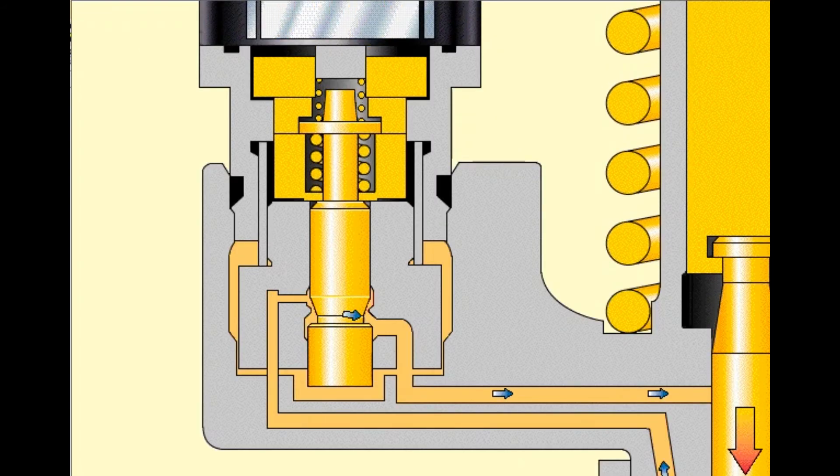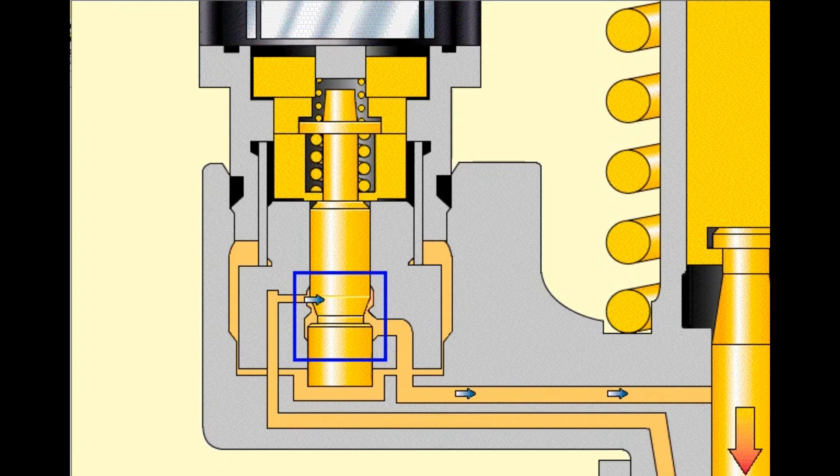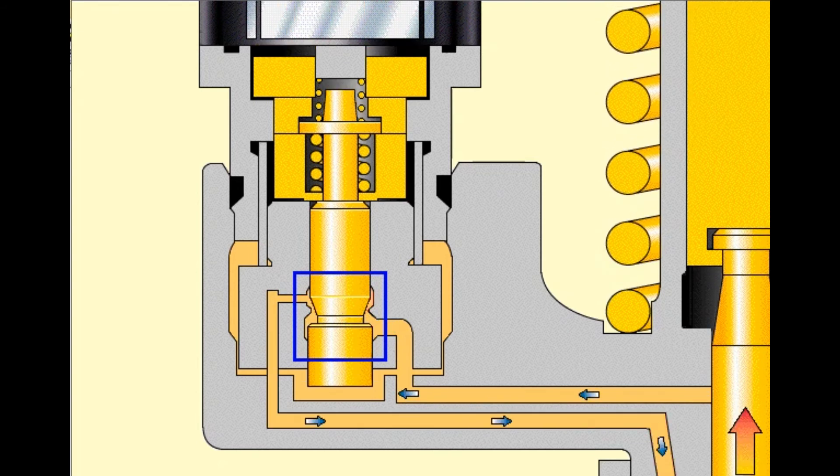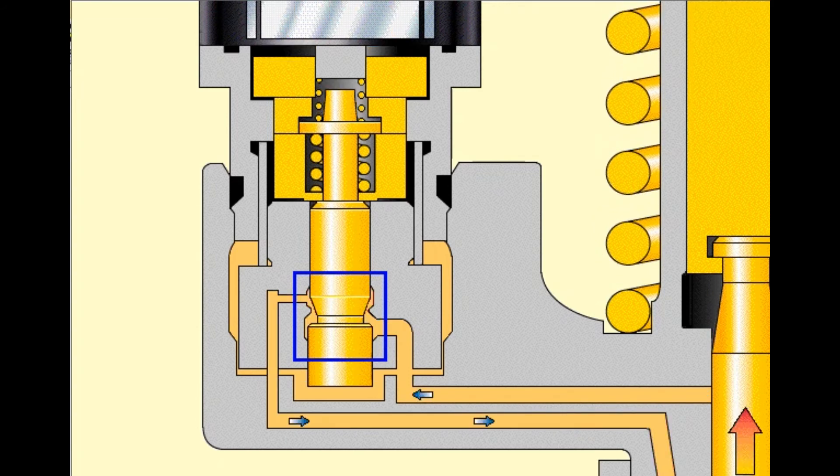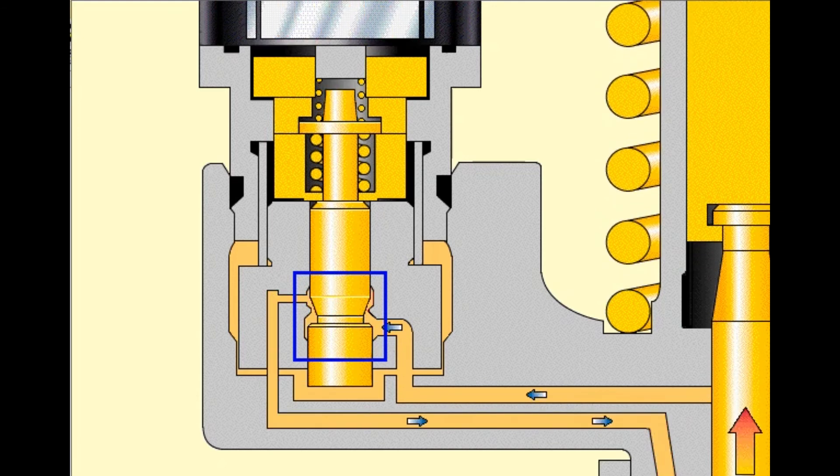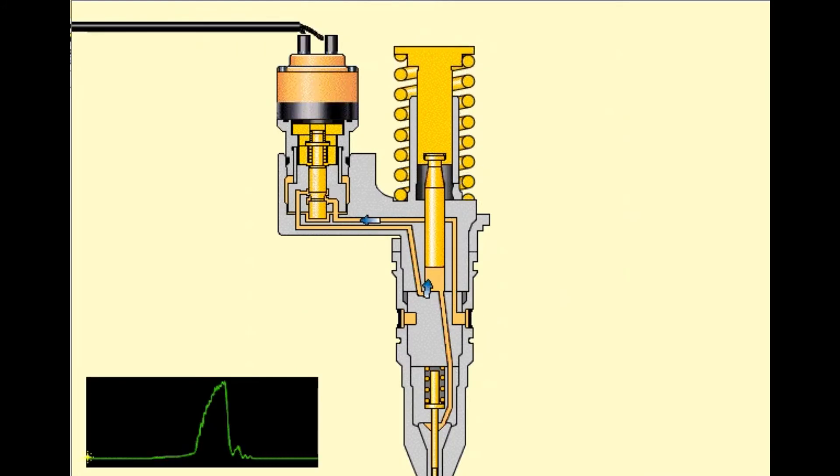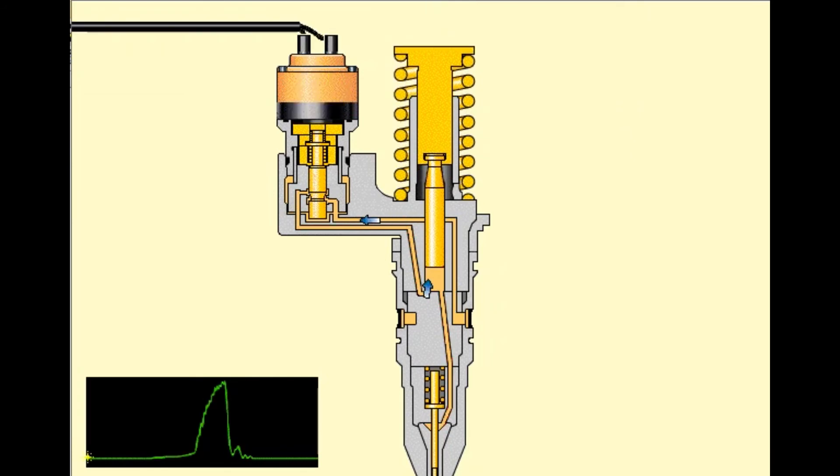Let's review the operation of the cartridge valve, which is the heart of the MEUI injector. In order to perform correctly, this valve must be able to open and close almost instantly, seal injection pressures of 152 megapascals or 22,000 psi, and prevent leakage of high pressure fuel during injection. Containing these elevated injection pressures without leakage requires extraordinary manufacturing precision and tolerances. Any high pressure fuel leaking past the poppet during injection is not delivered to the combustion chamber.